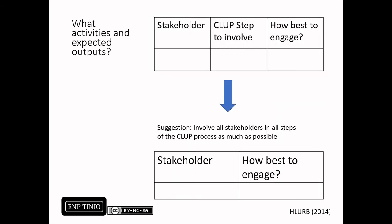One of the outputs of Step 2 is the stakeholder action plan. In the HLURB guidebook, a three-column table is prescribed as a template, where the stakeholder is identified, the step in which they are involved, and how to best engage them — whether through workshops, interviews, focus group discussions, etc.